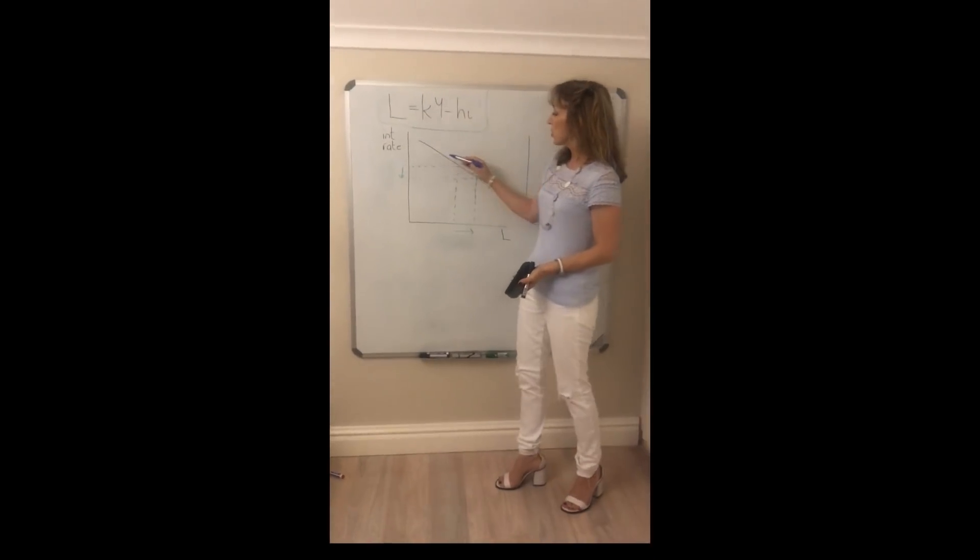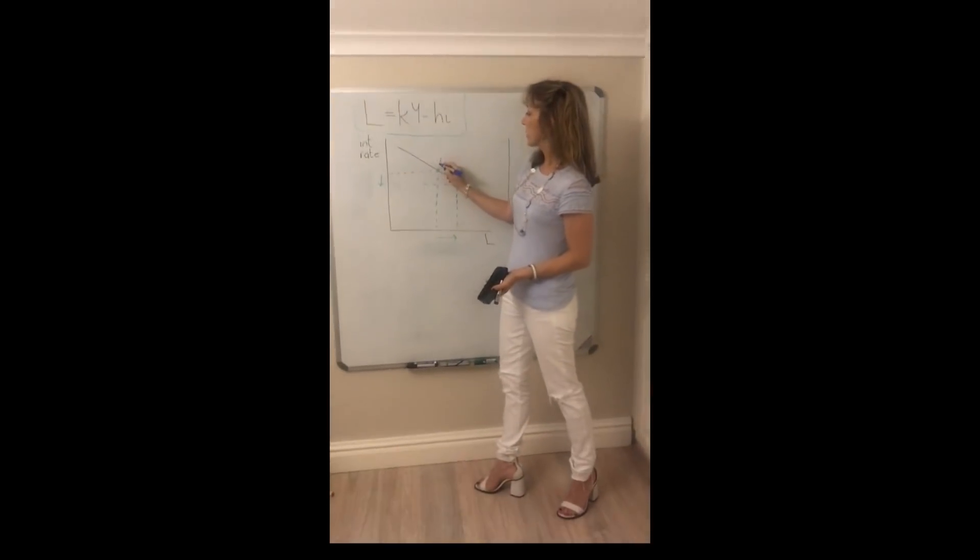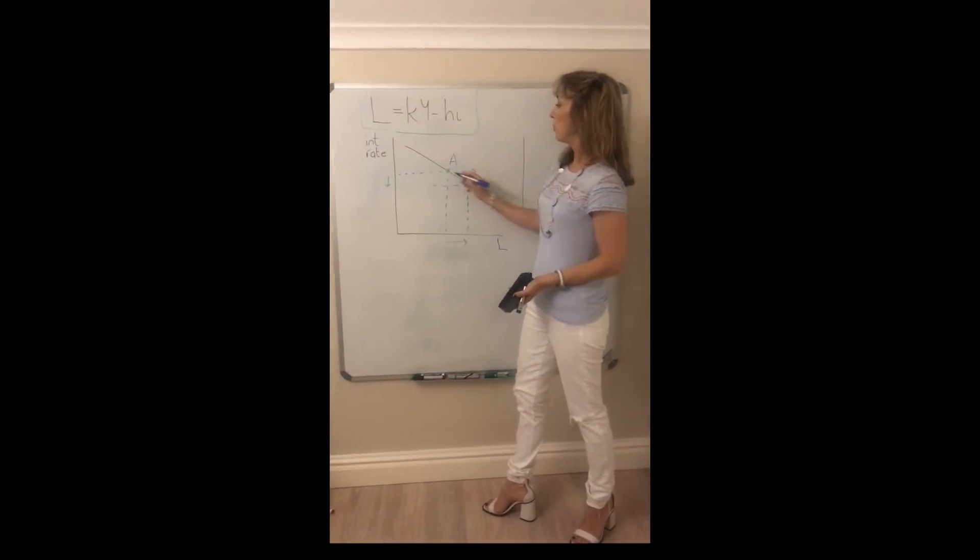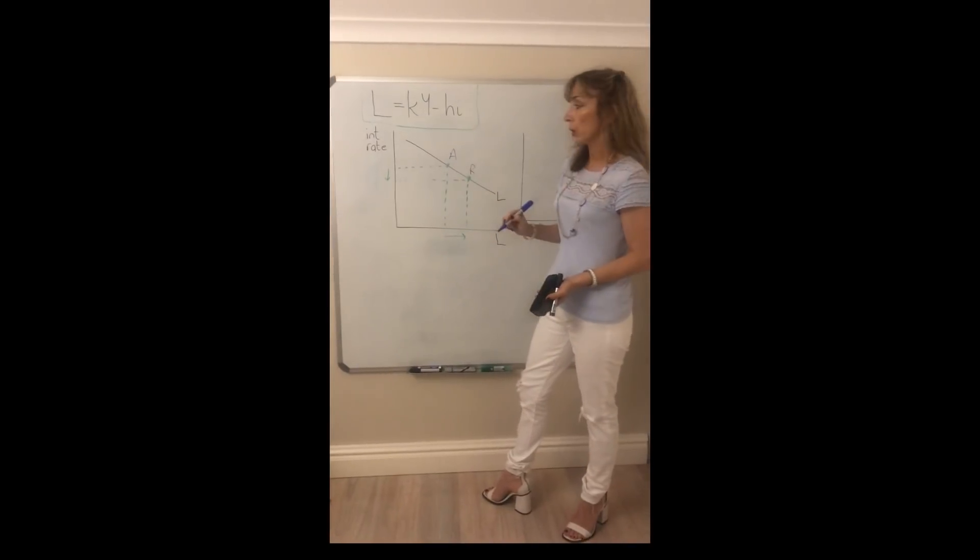So when the interest rate changes, we move from one point, say A to point B, we move along the money demand curve.